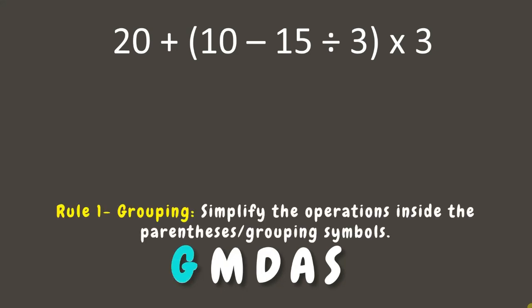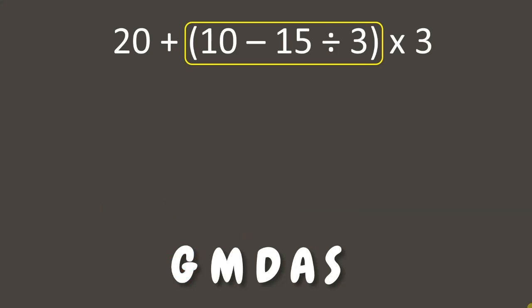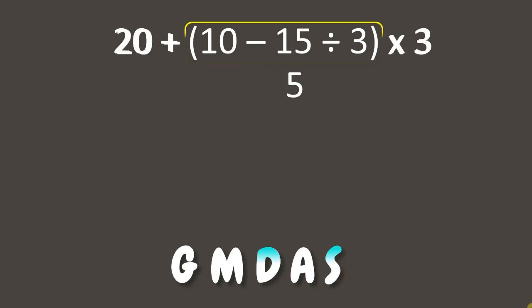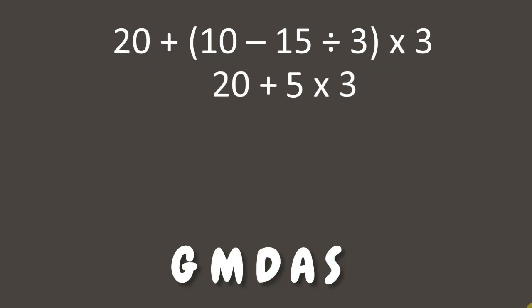Here we have expressions grouped in parentheses. Let's solve 10 minus 15 divided by 3. We can see two operations: division and subtraction. According to the rule, we divide first — 15 divided by 3 equals 5. Next, subtract 5 from 10, and that is 5. Now let's combine the remaining operations. We have addition and multiplication left.